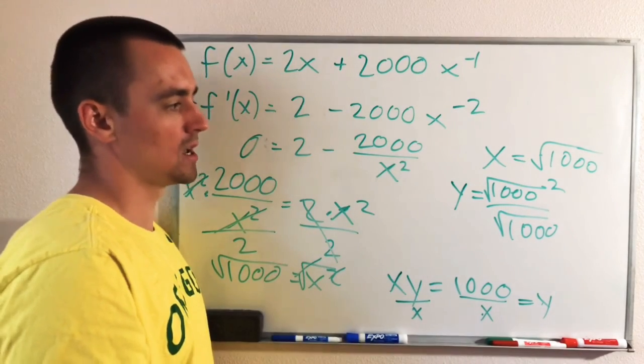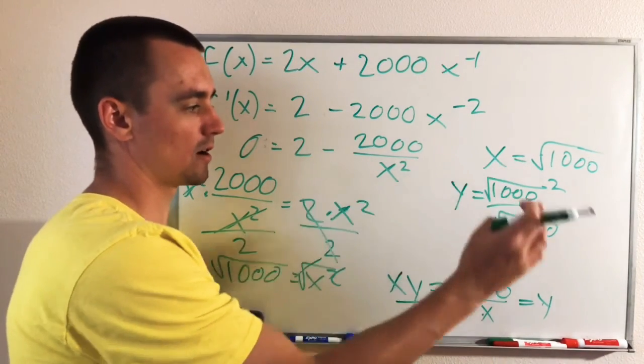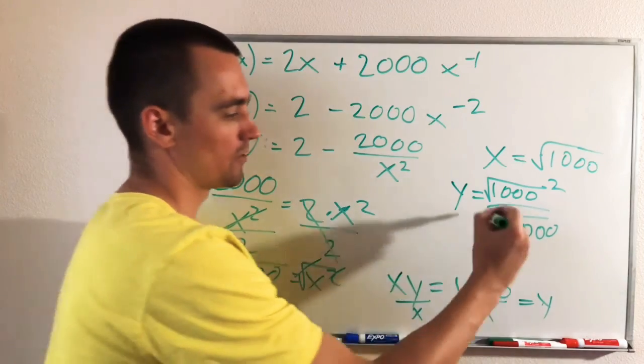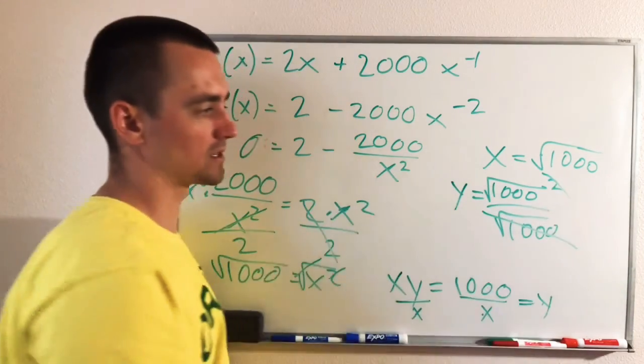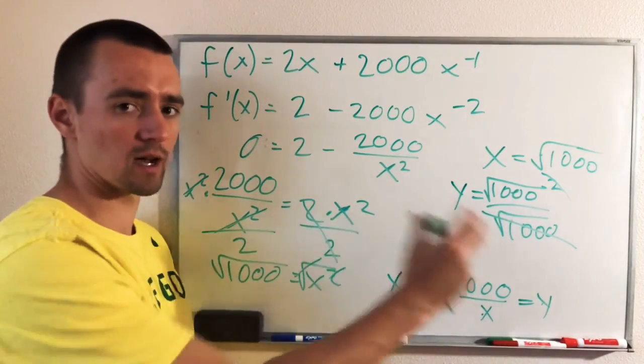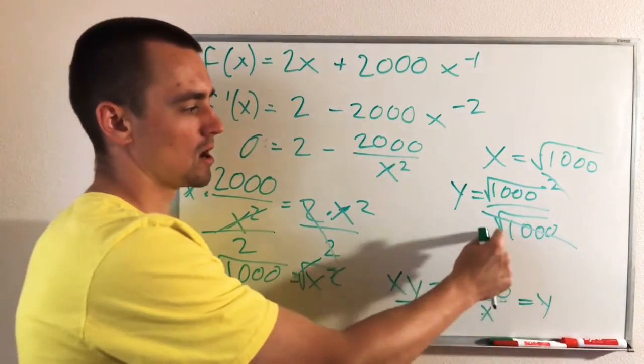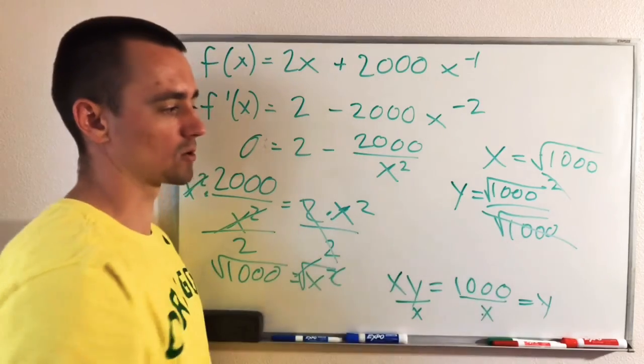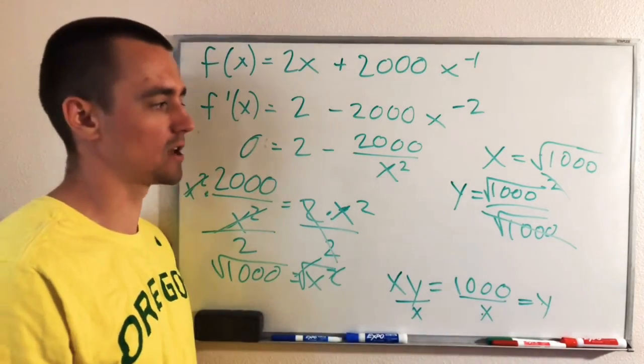But the reason why this is interesting is if we have something squared divided by that thing, the denominator is just going to cancel out with the squared piece, right? It's essentially, this is the square root of 1,000 times the square root of 1,000. One of them will cancel out with the square root of 1,000 that's on the denominator.